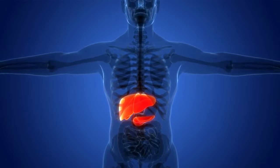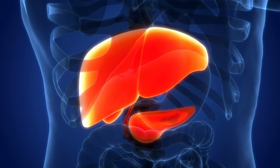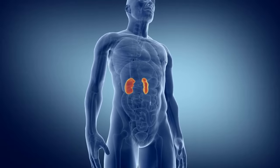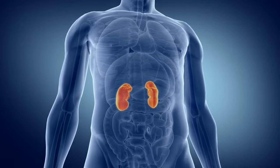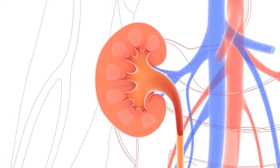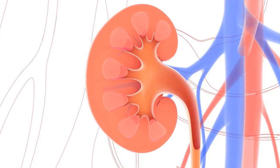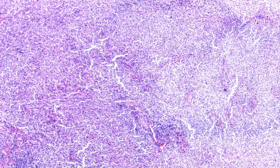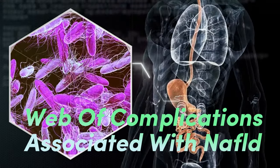Beyond the liver and cardiovascular system, NAFLD also impacts the kidneys. Emerging evidence suggests a link between NAFLD and chronic kidney disease, with shared risk factors such as obesity, diabetes, and hypertension exacerbating renal dysfunction. As NAFLD progresses, the risk of kidney complications escalates. By unraveling the web of complications associated with NAFLD, clinicians can chart a course towards early detection, intervention, and prevention, mitigating the devastating consequences of this silent disease.